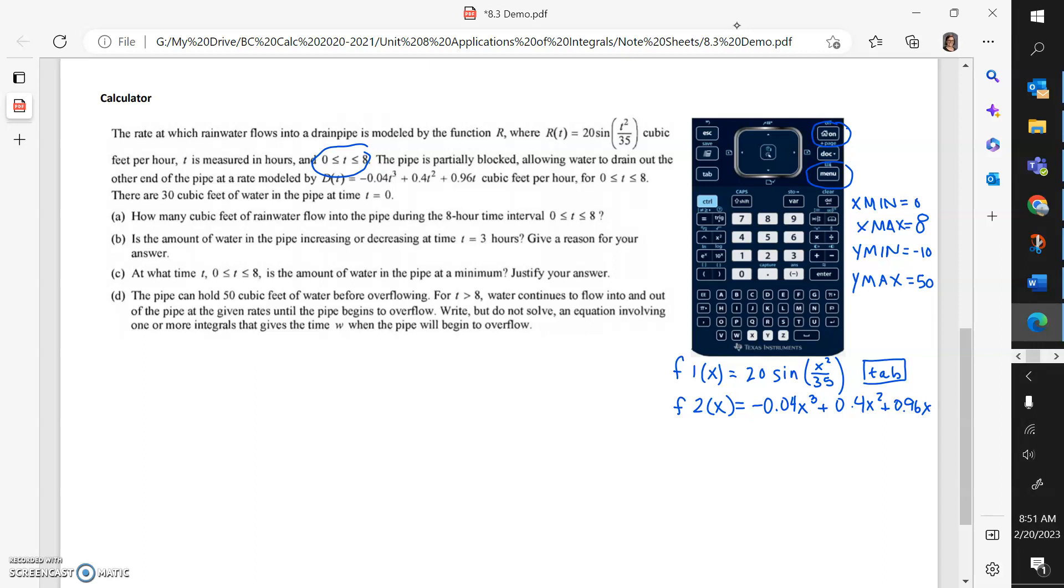There are 30 feet of water in the pipe at time 0. I'm going to go ahead and write that down as a piece of information in function notation. So the amount at 0 is 30. That's something that I might need later if I have to write an accumulation function.